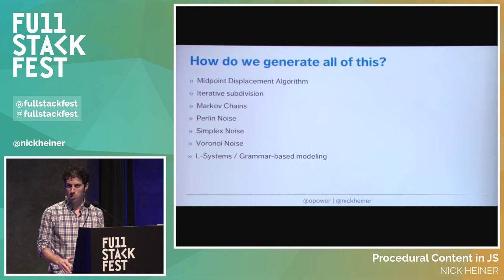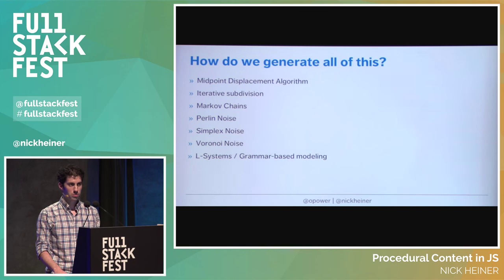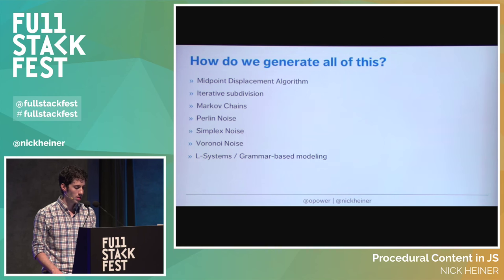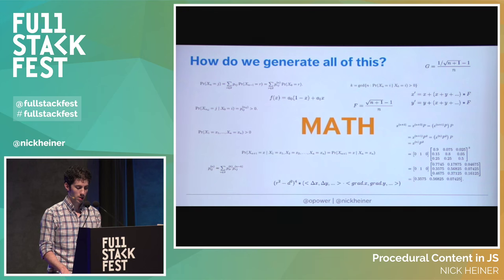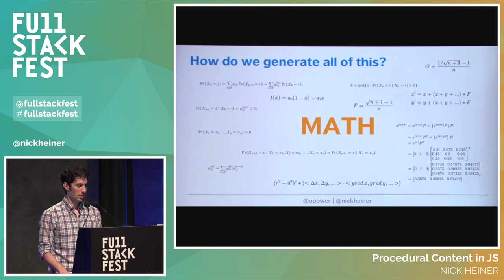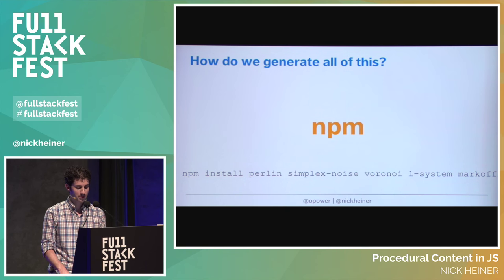So how do we generate procedural content? It's similar to machine learning — there's no hard and fast set of rules, but there are things people have found work pretty well. A lot of these are defined by complicated math that's difficult to cover in a half-hour talk before lunch. Fortunately, we live in JavaScript land, where there's a Node module for just about everything. These are some modules I used in my project and mostly found them to be quite reliable.